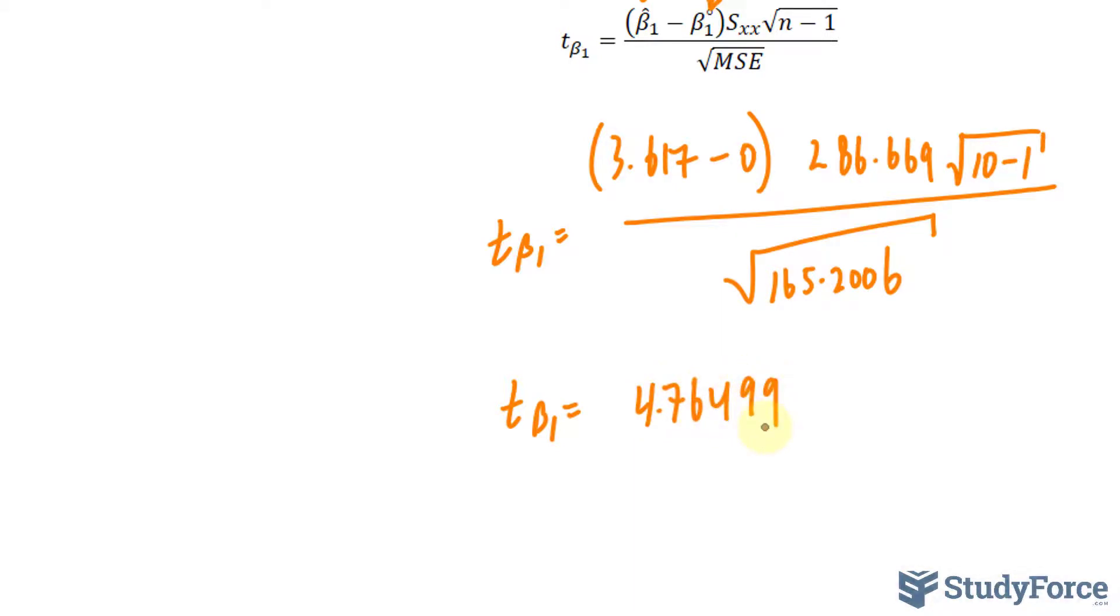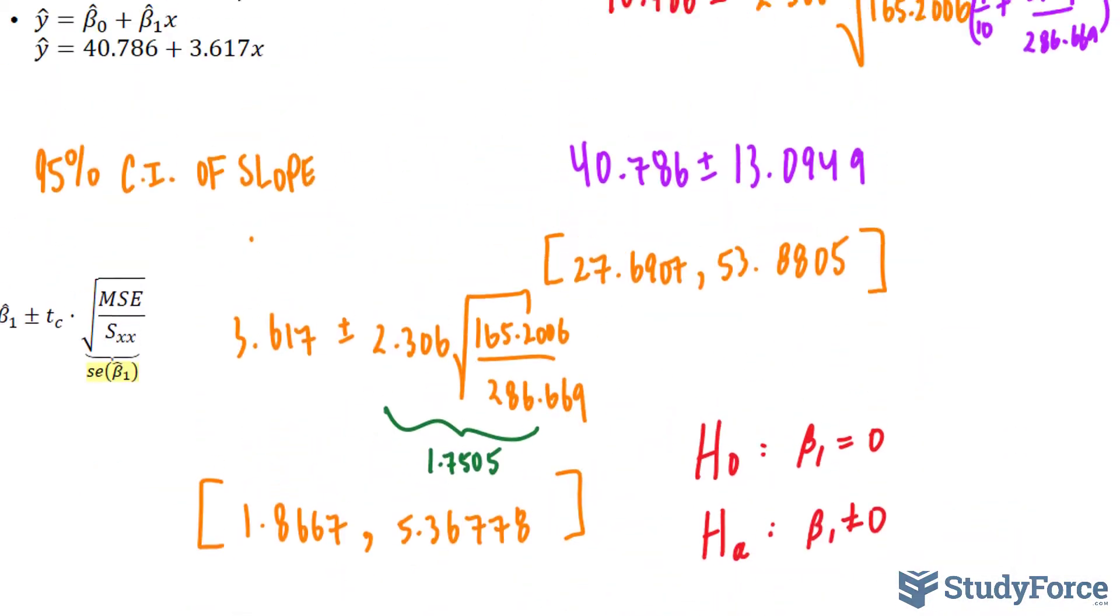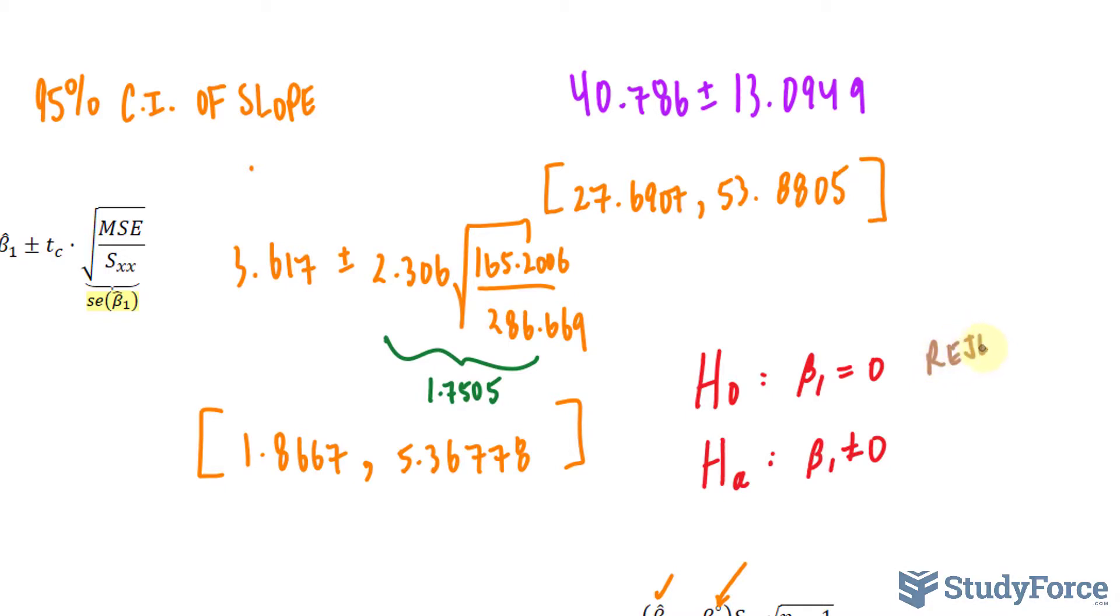We will compare this with the t-critical, and it's the same t-critical as before, which was 2.306. Showing this on a t-distribution chart, that's somewhere over here, 2.306. This number is greater than 2.306. It falls in the rejection region.